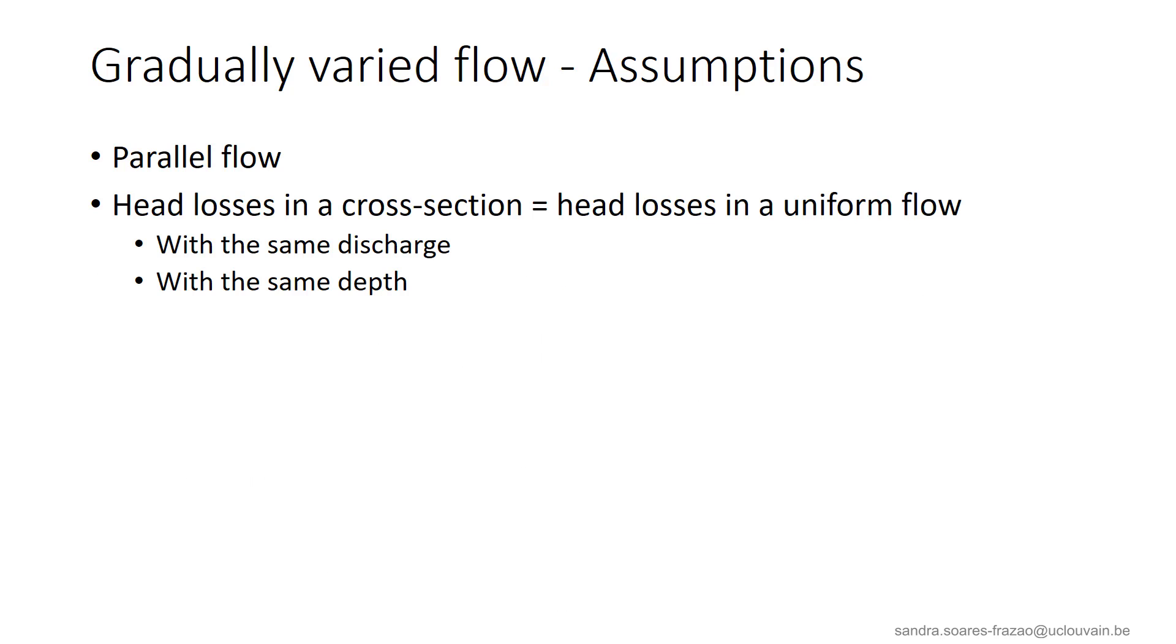In gradually varied flows, we will assume that the local energy grade line slope SF is equal to that of an equivalent uniform flow, with the same water depth and velocity in the considered cross-section. Let us explain this assumption.